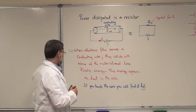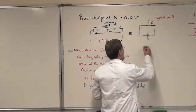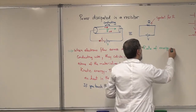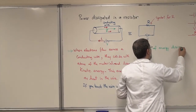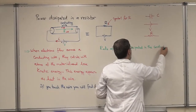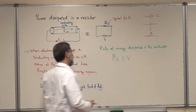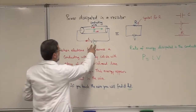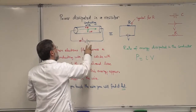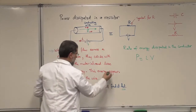So the rate of energy dissipated or lost in the conductor — we call it P — is equal to I times V: the current times the voltage applied. The more voltage you apply, the more power you lose. The more current in your circuit, the more power you lose. You lose it as heat; it appears as heat.